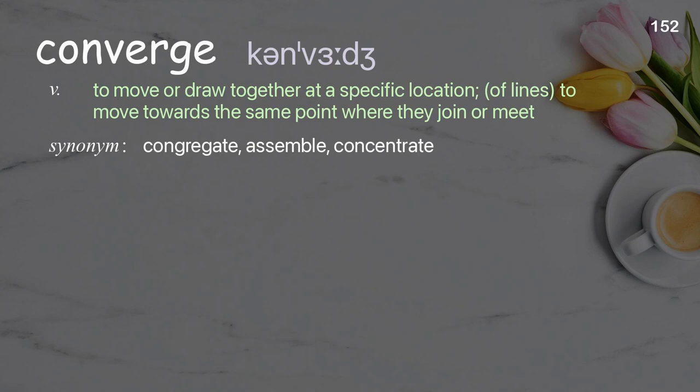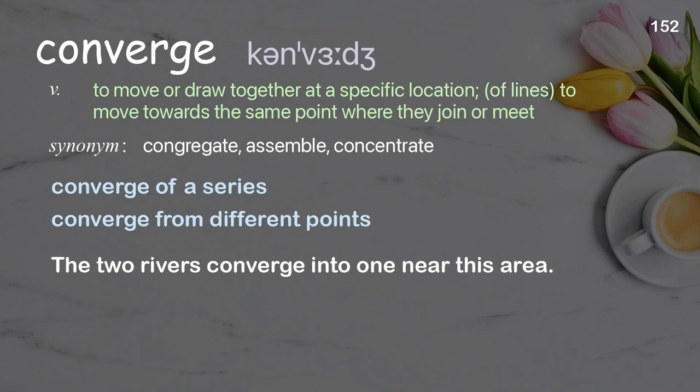Converge: to move or draw together at a specific location; of lines, to move towards the same point where they join or meet. Examples: convergence of a series; converge from different points. The two rivers converge into one near this area.